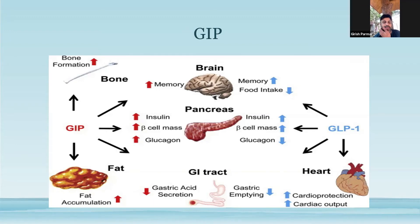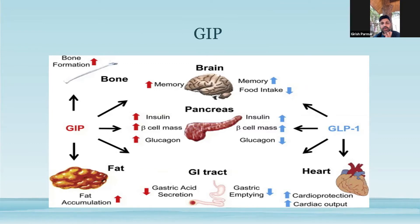GIP differs from GLP-1 at the level of the fat adipocytes. GLP-1 causes more of lipolysis, whereas GIP agonism or stimulation causes lipogenesis. So if you were to stimulate both GLP-1 receptors as well as GIP receptors, let's look at what are going to be the advantages and disadvantages.